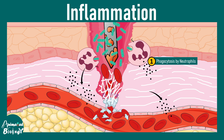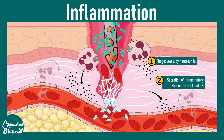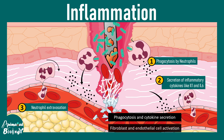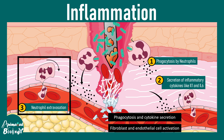Neutrophils secrete alarming molecules, basically cytokines, which can change the properties of the blood vessel and allow more neutrophils to come in. This process is known as neutrophil extravasation or leukocyte extravasation. Though it looks fairly simple, it has several molecular aspects to learn, as well as how it goes wrong in terms of disease. This process is really important for inflammation and wound healing.